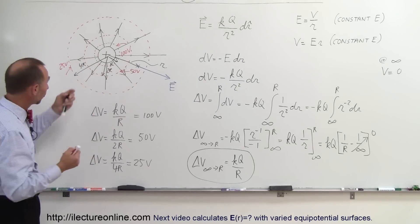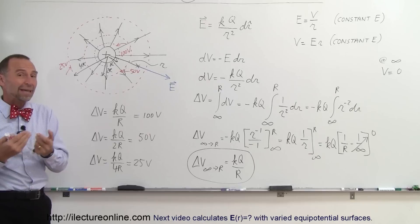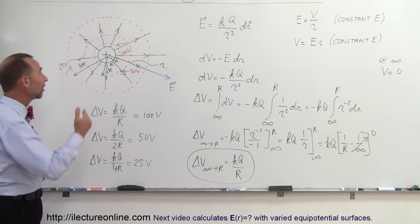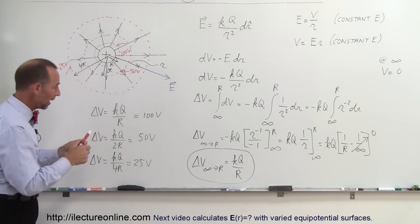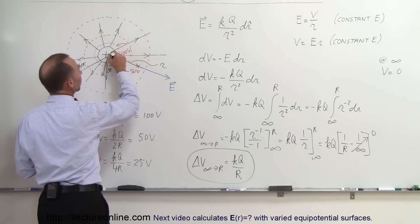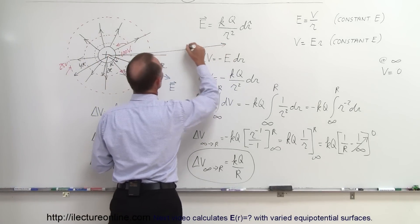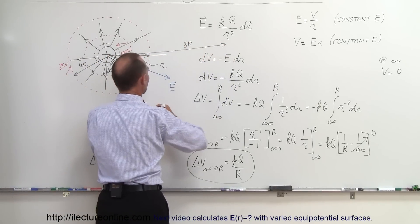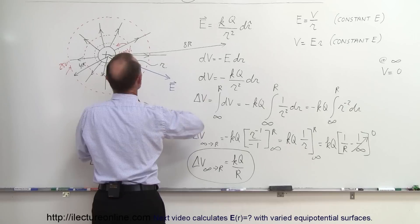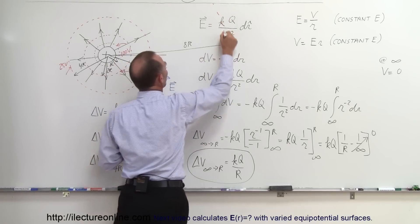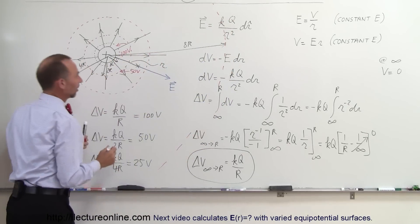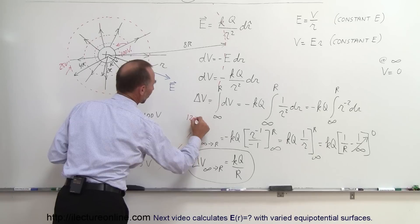How far would I have to go to find the surface where it would be half of that, 12.5 volts? I would now have to go 8R away. So 8R would be quite a distance away, like right out here somewhere. This would be 8R, and you can see that I have to draw a new equipotential surface way out here somewhere, that would then represent the point at which it's 12.5 volts.